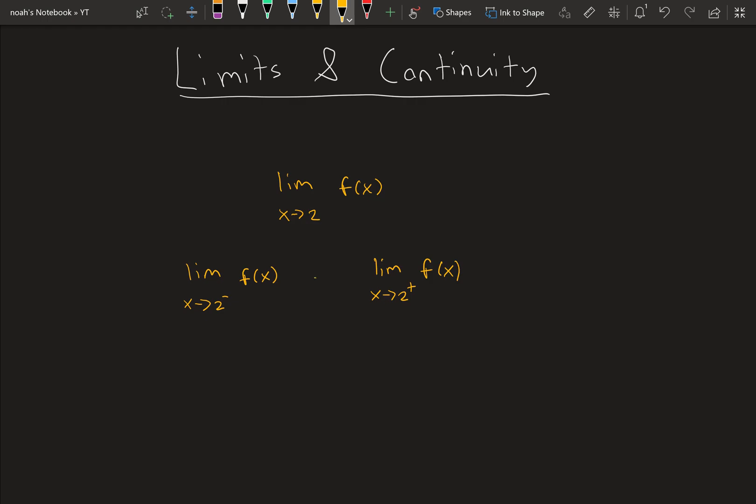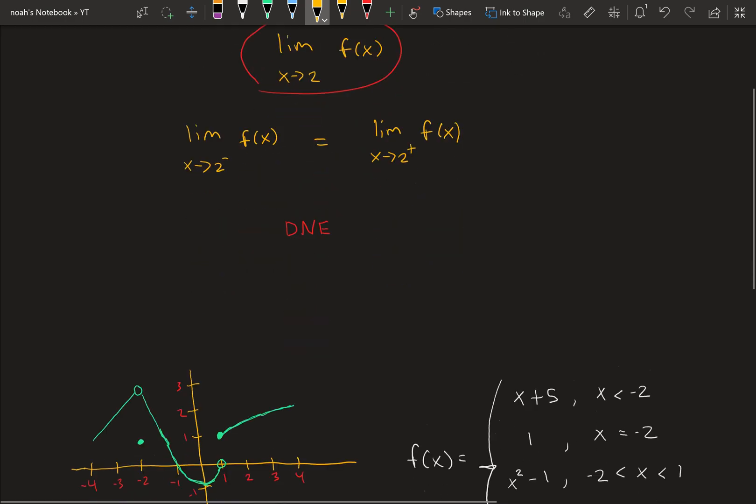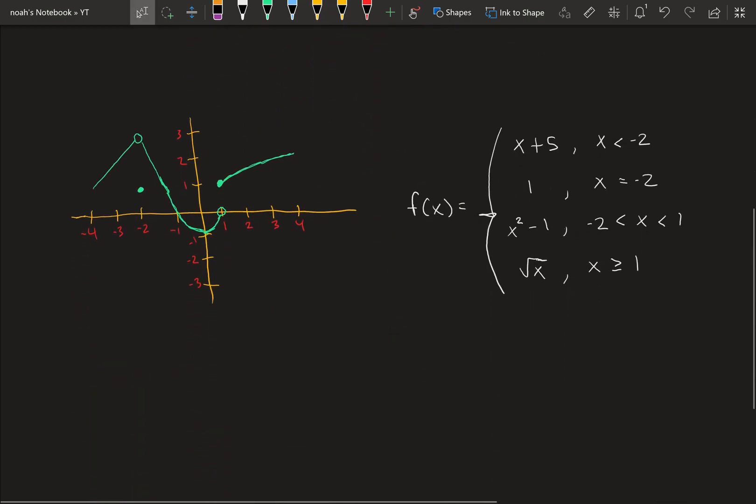If these two are equal, then this limit exists. If they're not equal, then it would not exist. We'd write DNE, or does not exist. Let's look at an example to make it easier to understand.